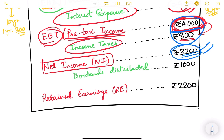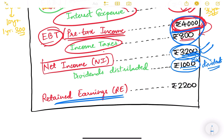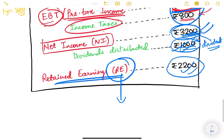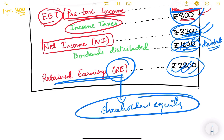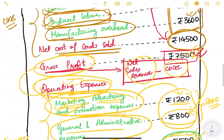Out of the net income of 3,200 rupees, the company distributes dividends to its shareholders - say 1,000 rupees. The remaining amount is retained earnings: 3,200 minus 1,000 equals 2,200 rupees retained with the company. These retained earnings become part of shareholders' equity on the balance sheet, because it is money left with the company that can be used as an asset.